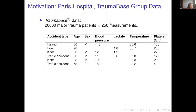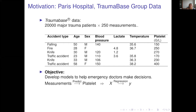Let me start from the motivation. For this research we had data from the Paris Hospital from a trauma base group. The data contains records for 20,000 major trauma patients for which we have 250 measurements, with some missing data. The goal is to develop a relatively simple model to help emergency doctors make decisions — immediately after an accident, patients are taken to the ambulance where some measurements can be taken.